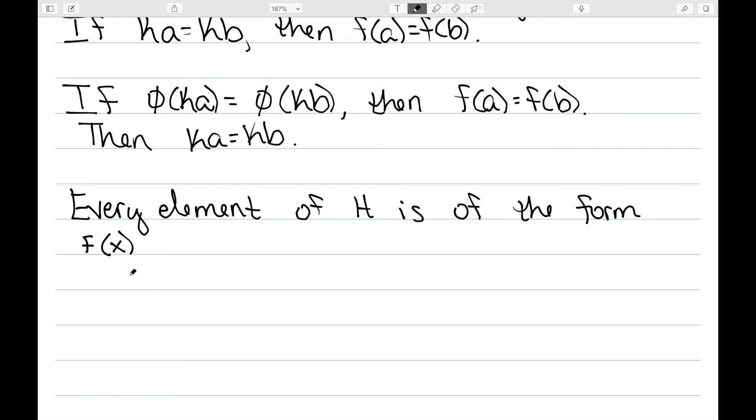To show it's surjective, every element of H is of the form F(X). Since my function F was onto, it was a surjective function, so every element of H can be written as F(X). By definition of my function, I then have phi(KX) is equal to F(X), which then gives me it's surjective.